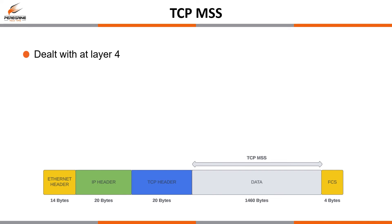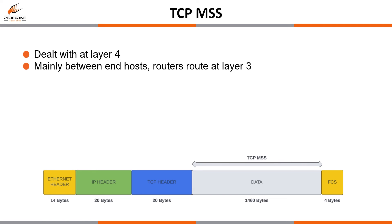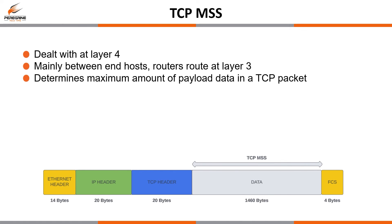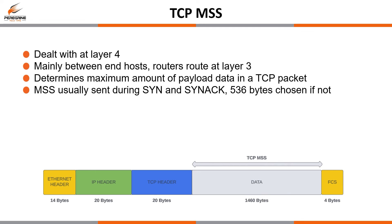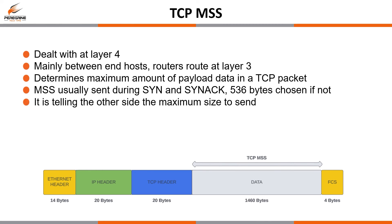TCP MSS is dealt with at layer 4, specifically for TCP, and is mainly used between end hosts, as routers at layer 3 do not care about layer 4 unless the traffic is destined to the router itself. It determines the maximum amount of data in a single TCP segment — in bytes — and basically refers to the maximum TCP payload size. The IP and TCP headers are not included; it is just the payload as shown in the diagram. The MSS is specified within the options field of the TCP header and is sent during the SYN and SYN-ACK. If it isn't sent, the other side will assume a safe value of 536 bytes. When a host sends an MSS value, it is essentially informing the other side not to send a TCP payload size any larger than that.